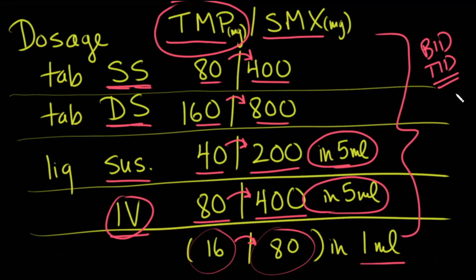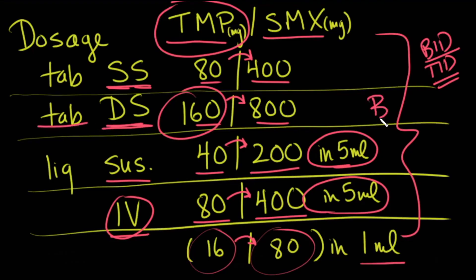For example, if a specific infection required 320 milligrams of trimethoprim per day given BID, that would be 160 milligrams per dose — the double strength tablet given twice daily. Just remember the correlation between the trimethoprim and sulfamethoxazole amounts, and that you'll be given the total daily dose of TMP. We'll join you for the next video when we talk about dosing and adverse reactions.